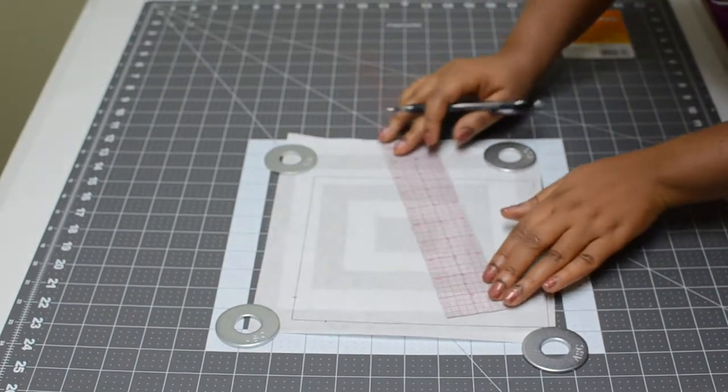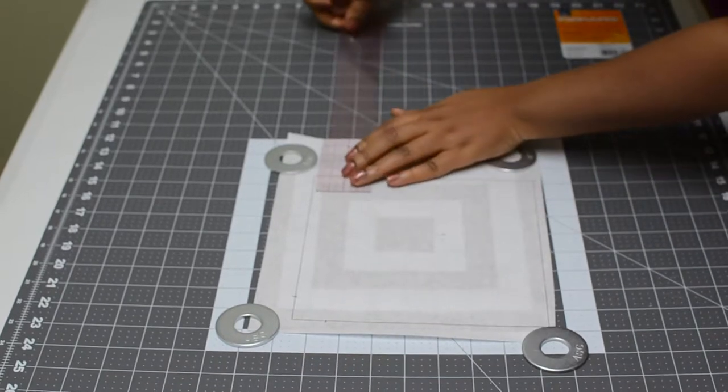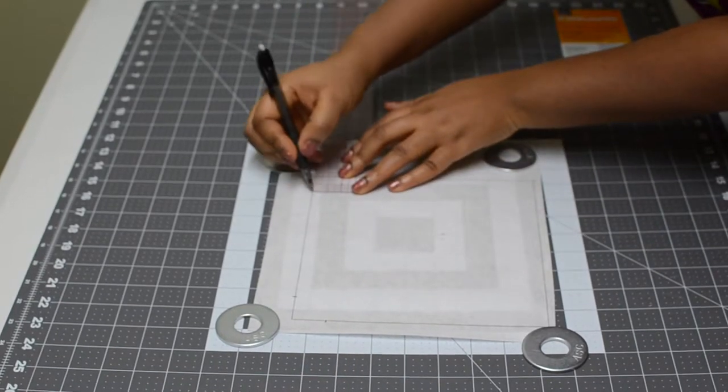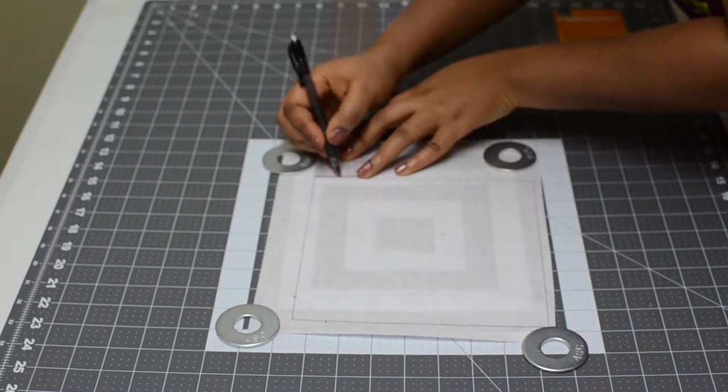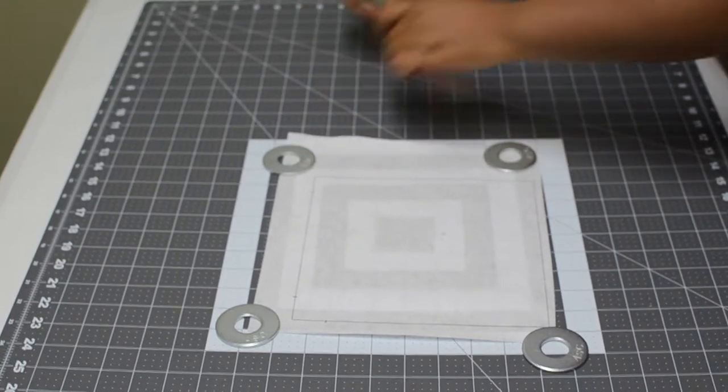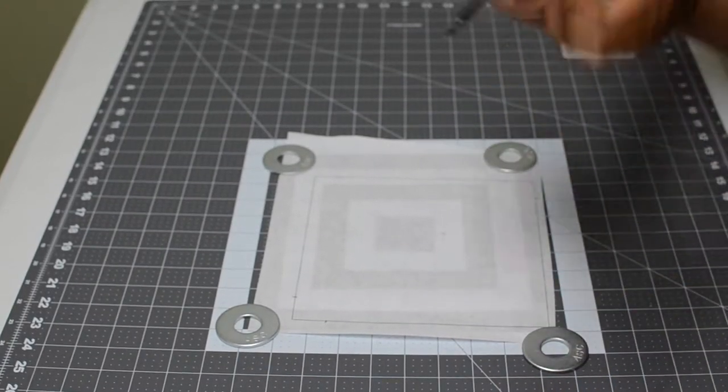When you're done with the lines, measure on each of the lines starting from the corners of each angle of the square, one inch each on each line.